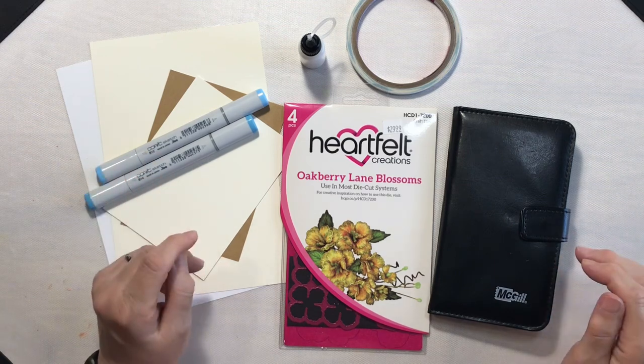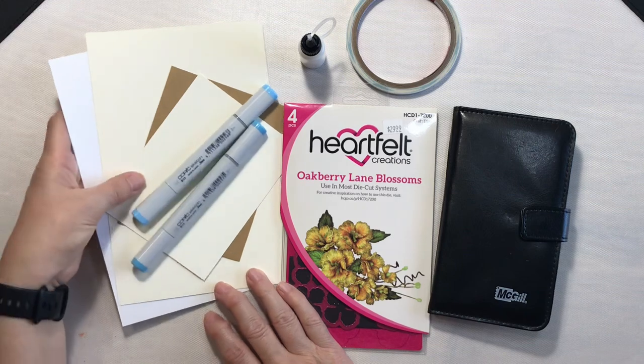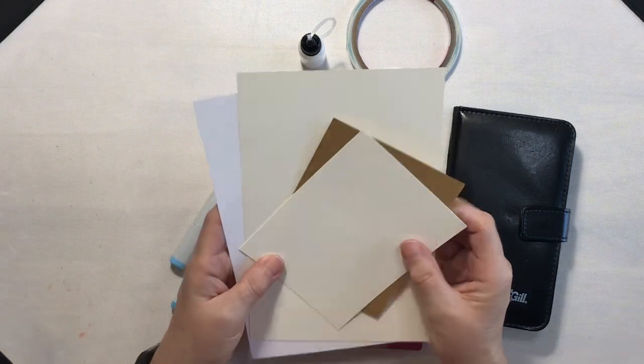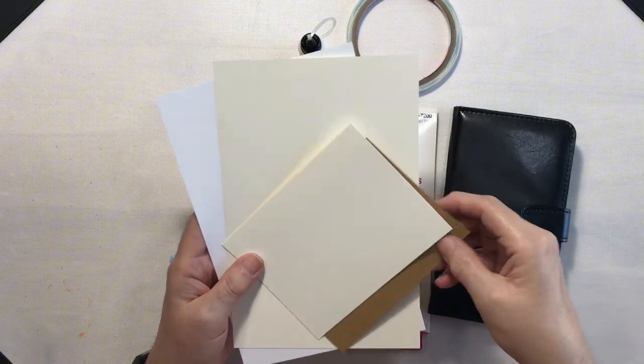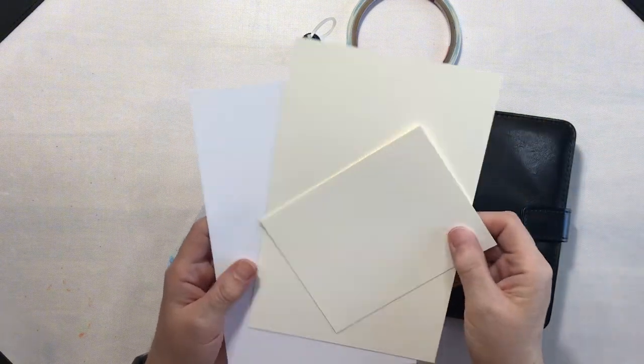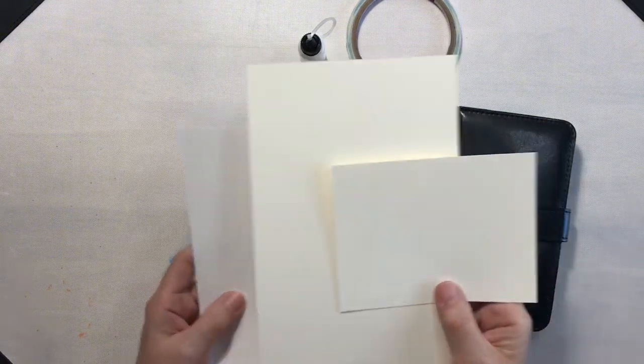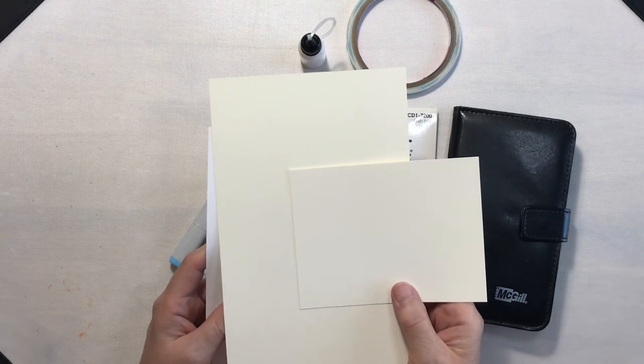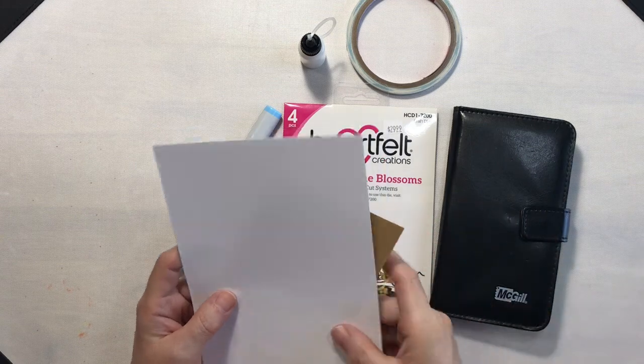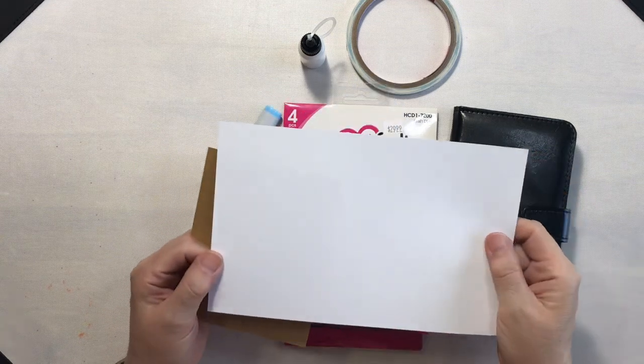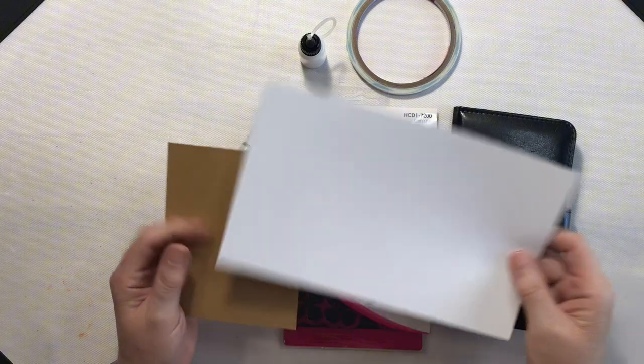Let's start by talking about our cardstock. This is all Recollections cardstock. For the card base and the card front I will be working with a cream color from the coffee and cream paper pack. This is 110 pound. I will be die-cutting some flowers from white 65 pound cardstock.